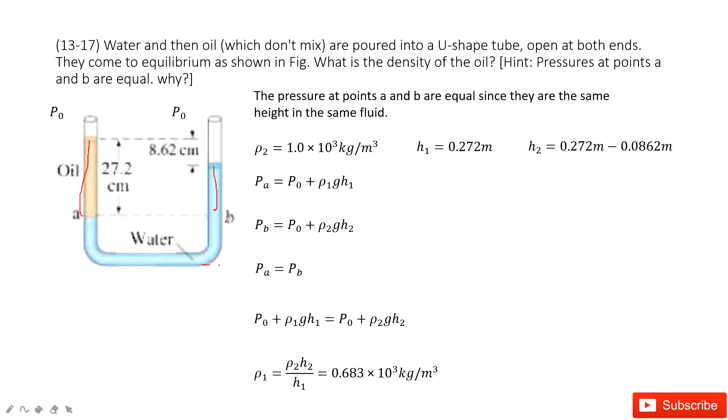Now we can see, if we want to find the pressure for A, that is P0 from the air plus ρ1gh1. And for B, Pb is P0 plus ρ2gh2. And Pa equals Pb.